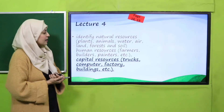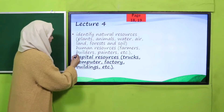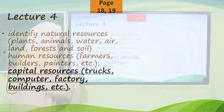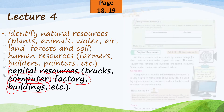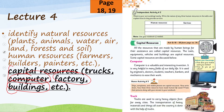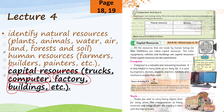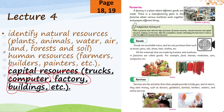Then we will move towards lecture number four. The third part — capital resources — will be identified here, like computers, factories, and buildings. The pages included are page number 18 and page number 19.